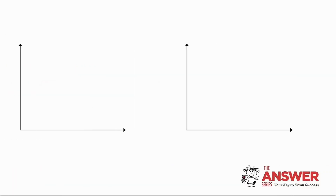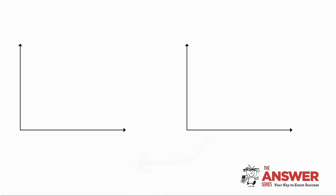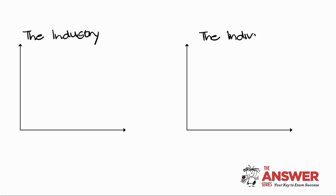Let's kick off today's lesson by unpacking the graphs. You will notice that I have two graphs drawn alongside each other and not below each other. There is a very specific reason why we draw these graphs alongside each other, and I am going to be getting into that in a bit. I'm going to start by assigning them headings. My graph on the left-hand side is always known as the industry graph, and my graph on the right-hand side is always known as the individual producer.